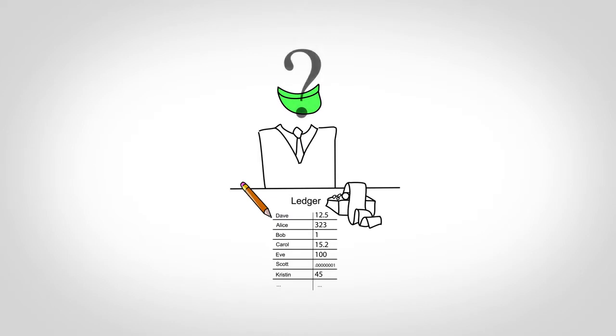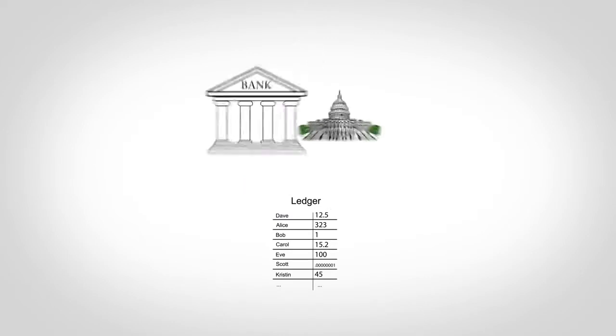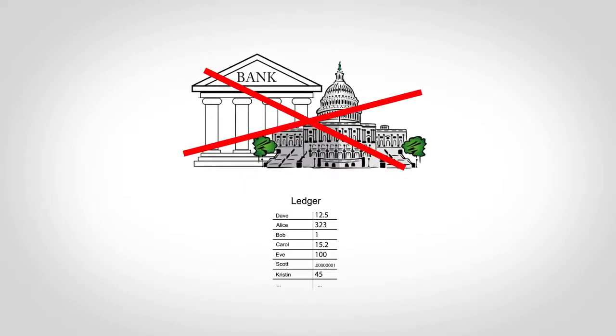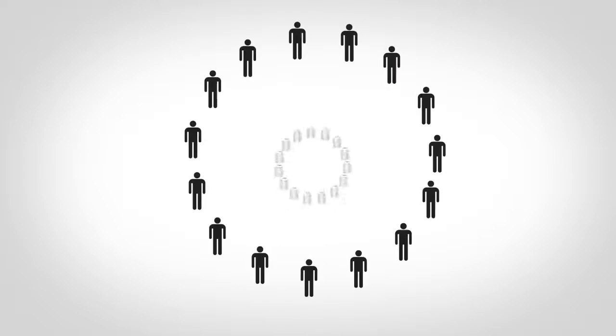So who maintains this ledger and makes sure no one cheats? One goal of Bitcoin is to avoid any centralized control, so every participant maintains their own copy of the ledger.